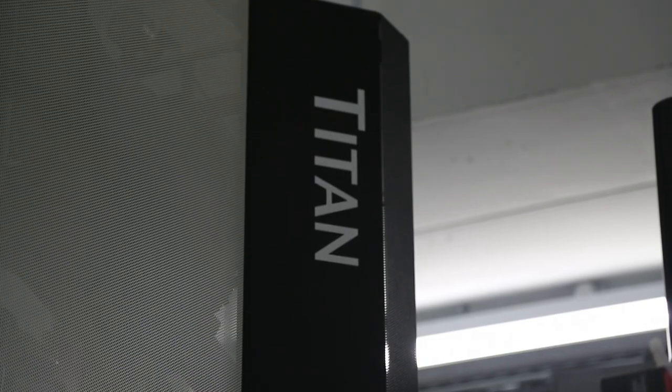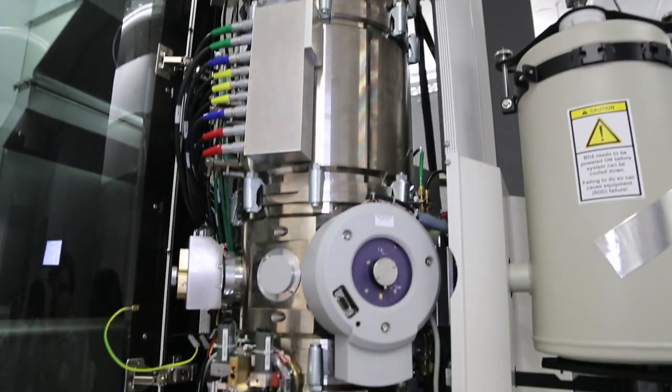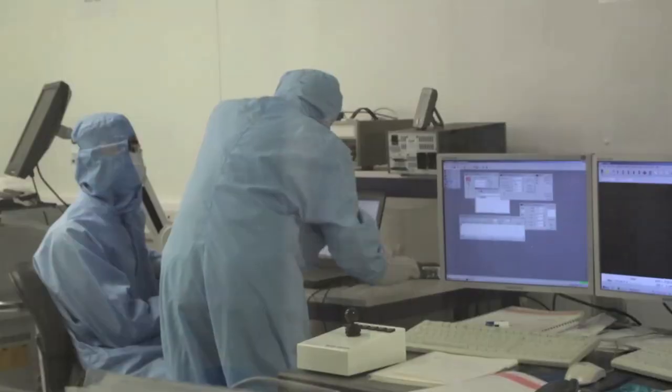One of the things that really helped us to understand that you really did have graphene was the types of very exciting new microscopes that are now available. And it was the availability of these microscopes that really helped them understand that what they actually had was a single atomic layer.